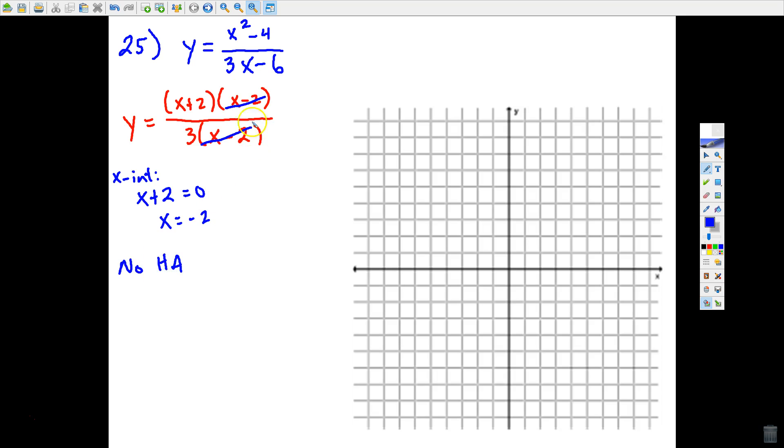And you might be thinking, well, what about oblique? Because the numerator degree is 1 more, but remember, something else has to be true. There cannot be any common factors that can be canceled between the numerator and the denominator. Well, obviously, we have that here. So there's no oblique asymptote.